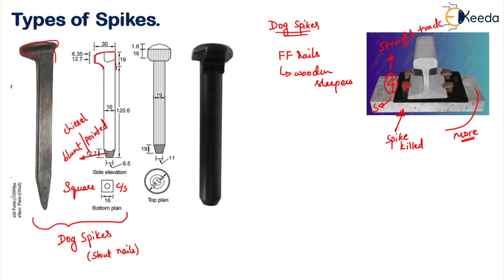The only disadvantage of your dog spikes is that when there is a lot of vibration, they tend to loosen very easily under moving loads, and this will in turn result in creep of your rails. So this is all about the first type — your dog spike.